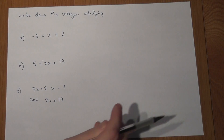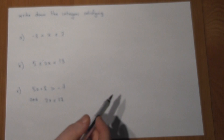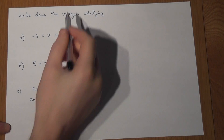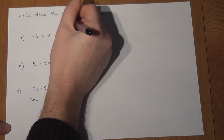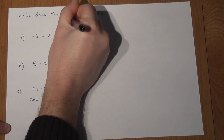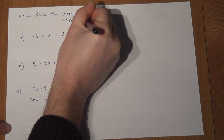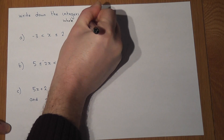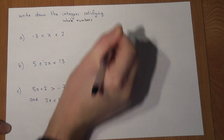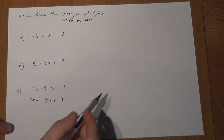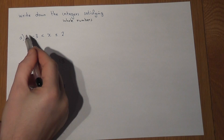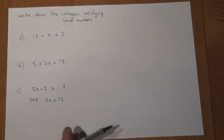This video reviews concisely working out integers or whole numbers which satisfy a given set of inequalities. There are just three examples here to show how this works.